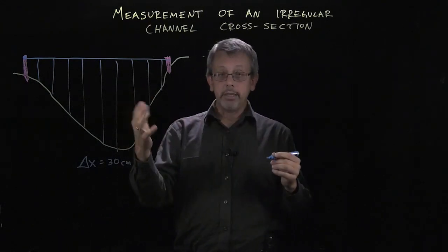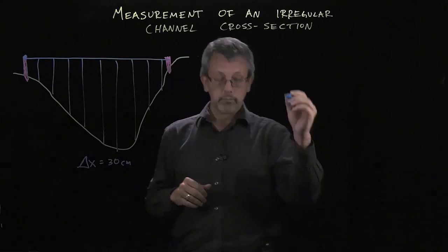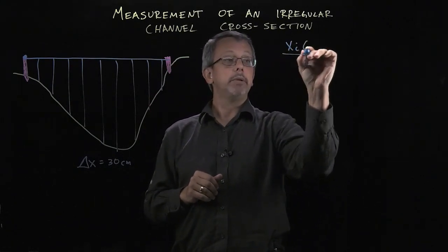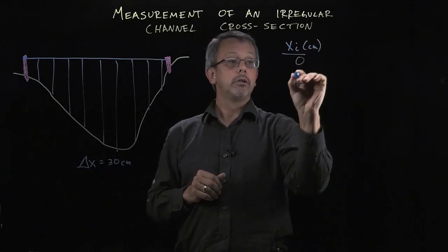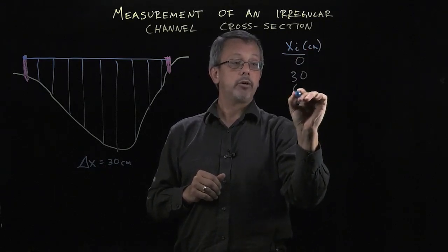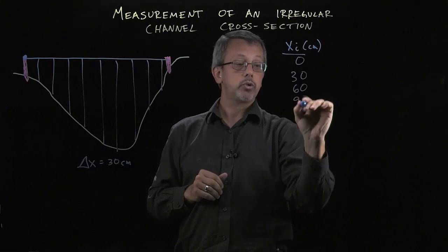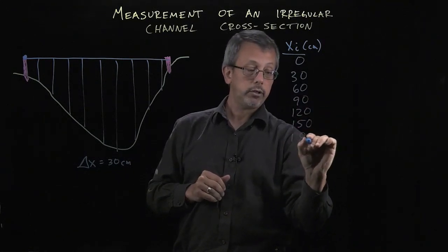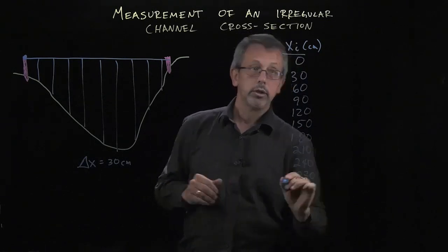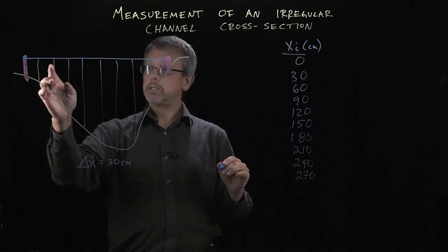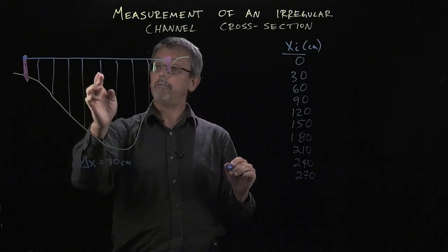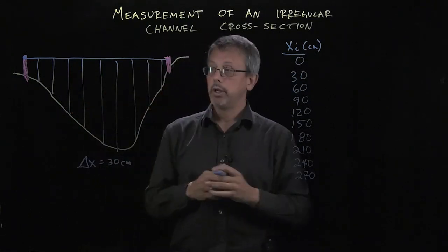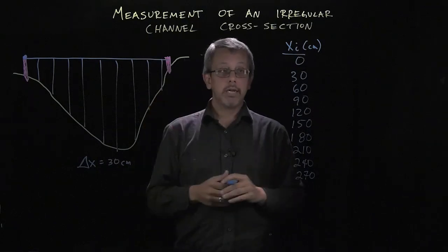Once I've selected that increment, let's go ahead and make a chart over here. Here's all my values x_i measured in centimeters, and I have increments every 30 centimeters: 0, 30, 60, 90, 120, 150, 180, 210, 240, and 270. So there's all the measurements that I would like to make.